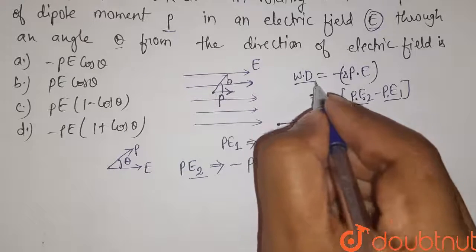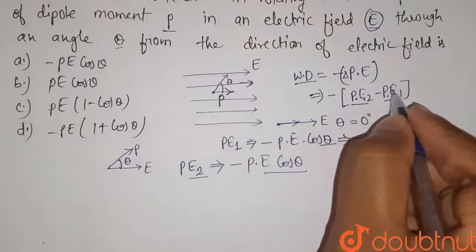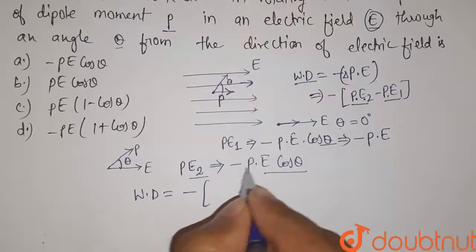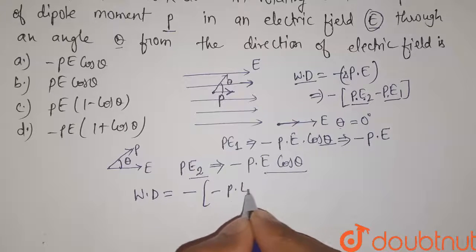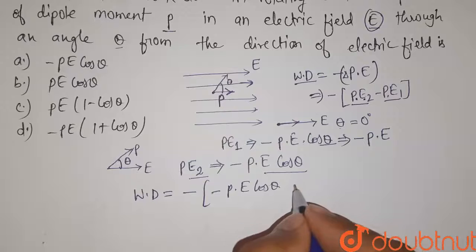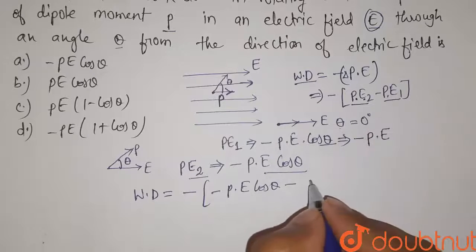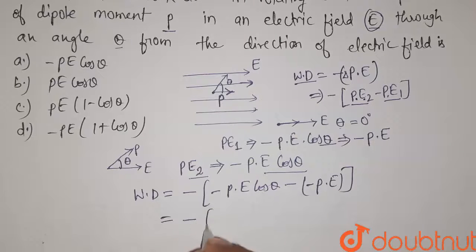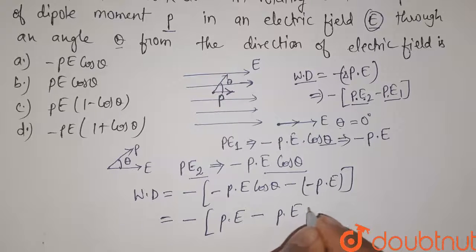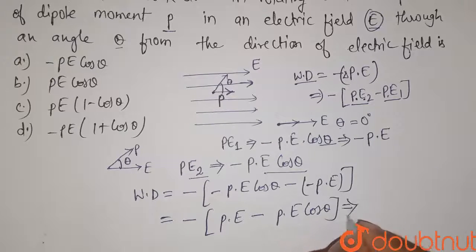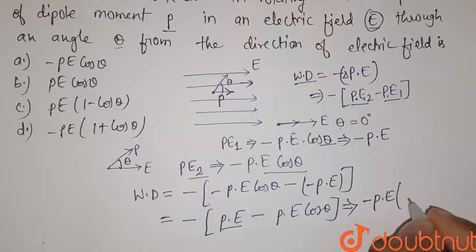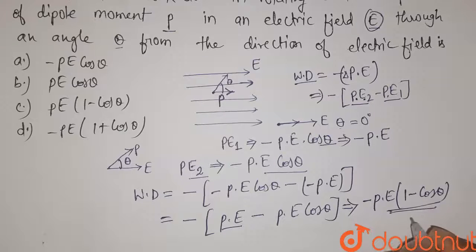Now the work done is given by negative of PE2 minus PE1. Substituting the values, it is minus of [minus p E cos(theta)] minus [minus pE], which simplifies to minus p E cos(theta) plus pE. Taking p times E common, we get minus p times E times (1 minus cos theta).